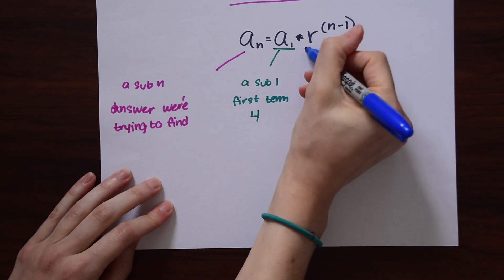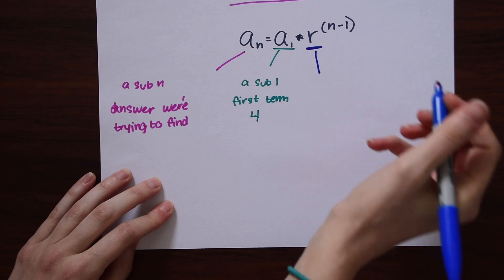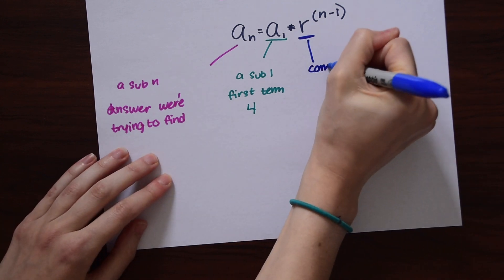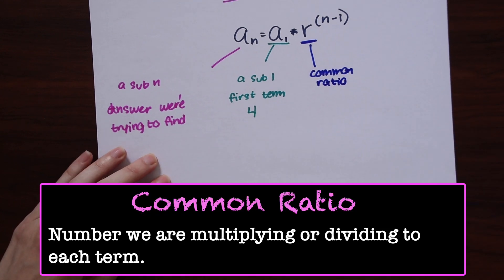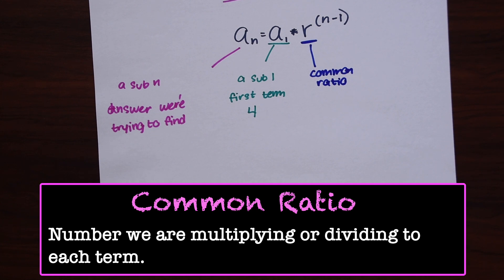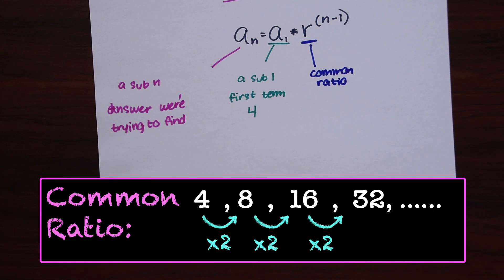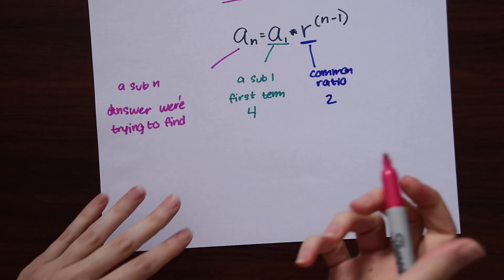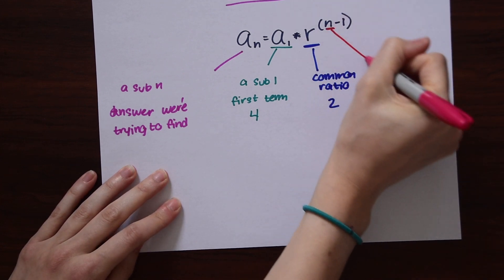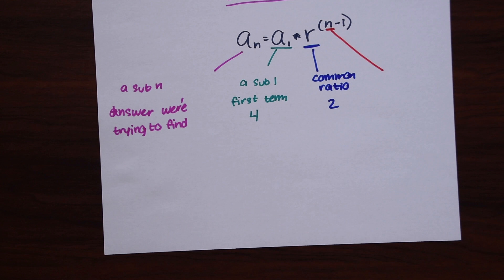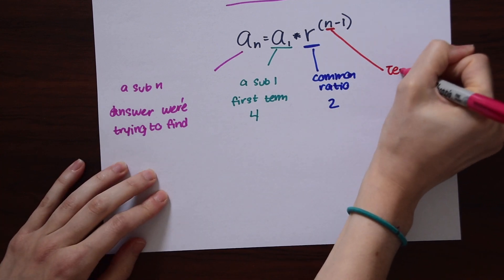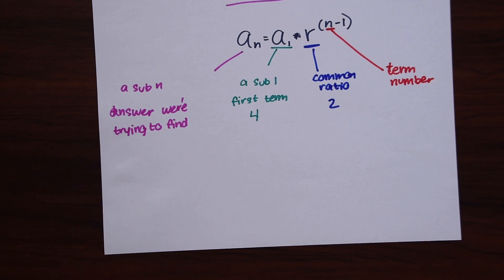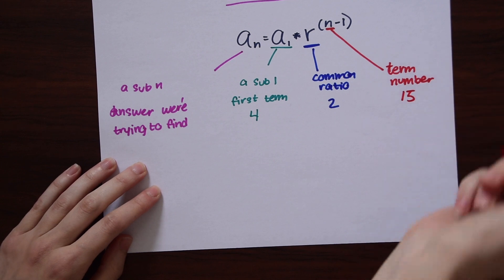Then we have r, which is something specific to geometric sequences only — it is called the common ratio. This is the number that we are multiplying or dividing to each term in the sequence. In the sequence we were just looking at, r is 2 because we're multiplying 2 to each term. And our last variable is n, which represents the term number we're trying to find — in this case, 15 because we want to know the 15th term.